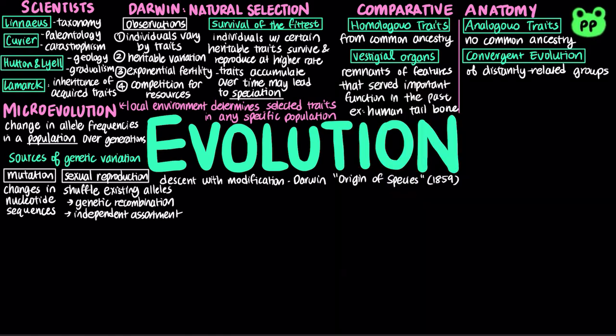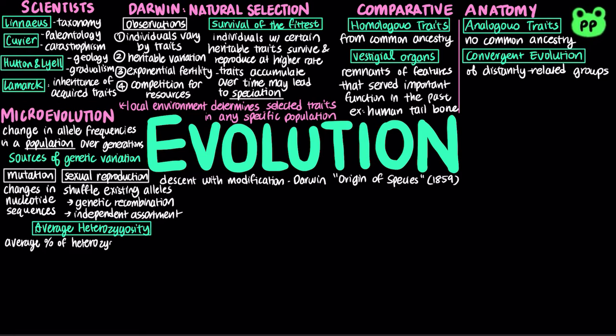A gene pool consists of all the alleles for a loci in a population. A locus is fixed if all individuals in a population are homozygous for the same allele. A measure of genetic variation within a population is average heterozygosity, which is the average percent of loci that are heterozygous in a population.